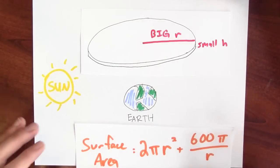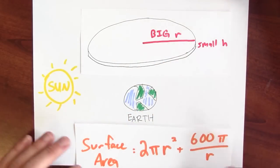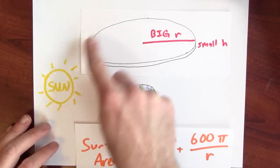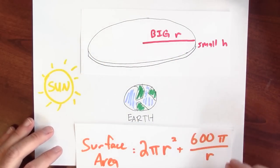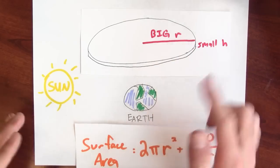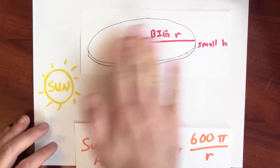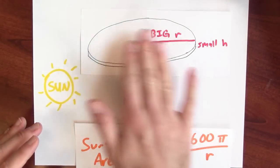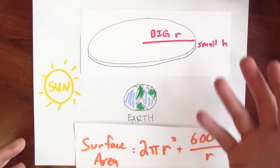No. If I make r really big, admittedly this quantity, 600 pi over r, which is measuring the curved area, that'll end up being very small. But 2 pi r squared when r is really big, this quantity, the amount of metal in the top and the bottom of the can, is enormous. So this is not a great choice for soup cans.